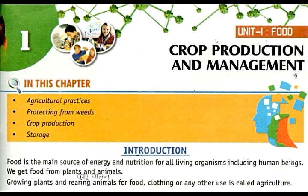What is crop production? Crop production means the production of many types of plants which completes the need of our country. In previous days our country was not sufficient in crop production, but after the green revolution the crop production became very high. Crop production means the various types of processes which are used in production of any crops.